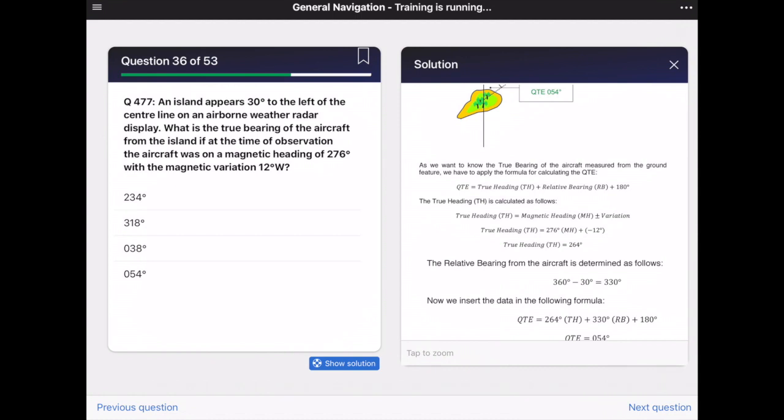In the next step we calculate the relative bearing. The relative bearing is a bearing measured with respect to the nose of the aircraft or to the aircraft magnetic heading.